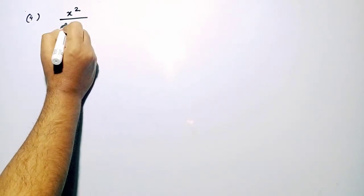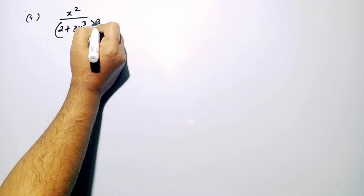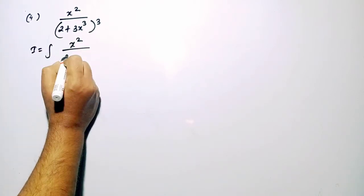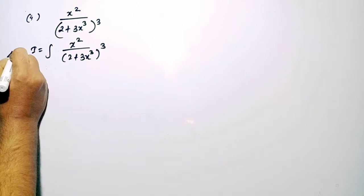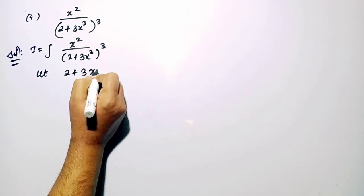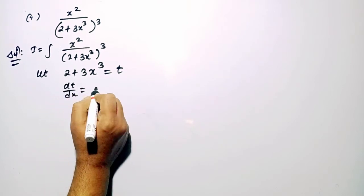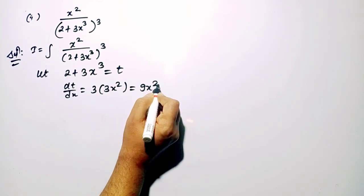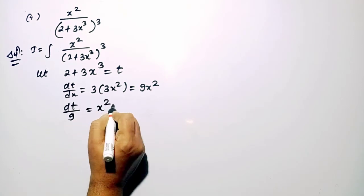Moving to the next question: x square divided by (2 plus 3x cube) whole cube. I equals integration of x square upon (2 plus 3x cube) whole cube dx. We consider 2 plus 3x cube equal to t. Differentiating with respect to x, dt by dx equals 9x square, so dt upon 9 equals x square dx.